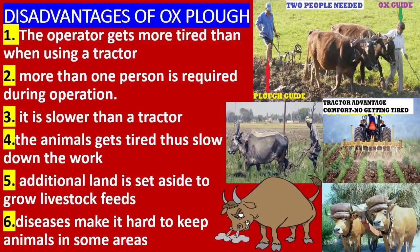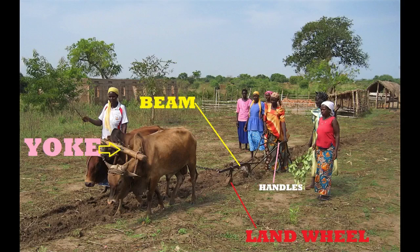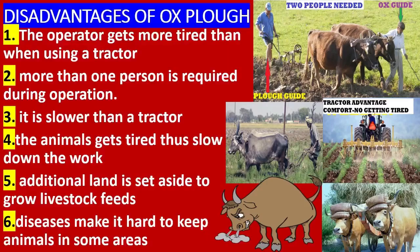Disadvantages of the ox plow: one, the operator gets more tired than when using a tractor. Two, more than one person is required during operation. Three, it is slower than a tractor. Four, the animals get tired, thus slowing down the work. Five, additional land is set aside to grow livestock feeds. Six, diseases make it hard to keep animals in some areas.